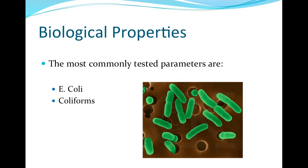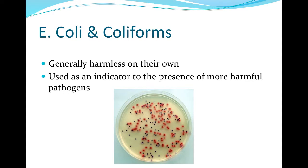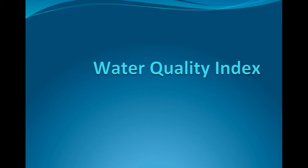Biological properties routinely measured to assess water quality are E. coli and fecal coliform concentration. Although generally harmless, the presence of these bacteria in a body of water suggests contamination from animal or human waste and demonstrates the potential for pathogen transfer to people consuming or recreating in the water. The Water Quality Index includes the parameters just discussed and a few others to assign a grade to the body of water of interest. This is the process used by the state of Ohio to monitor the quality and health of aquatic systems.